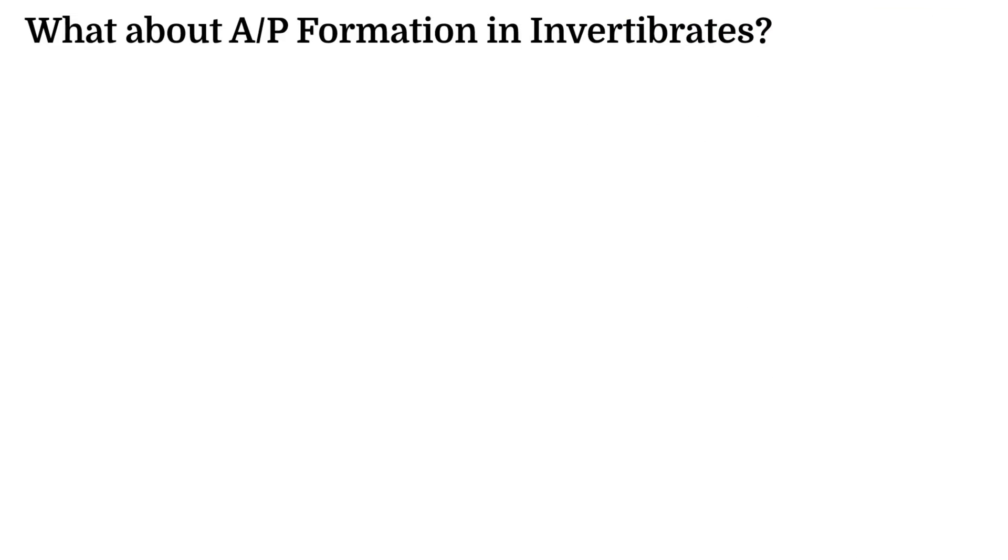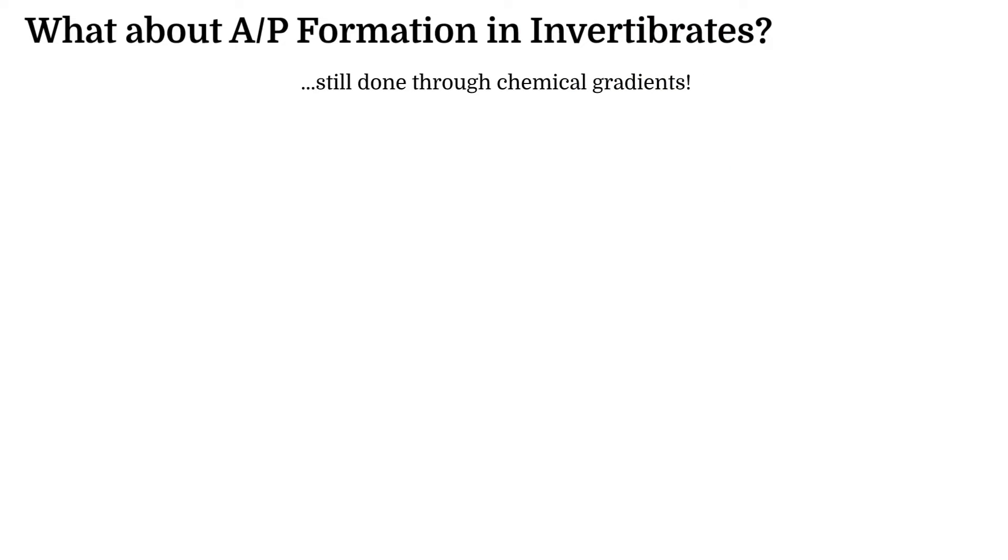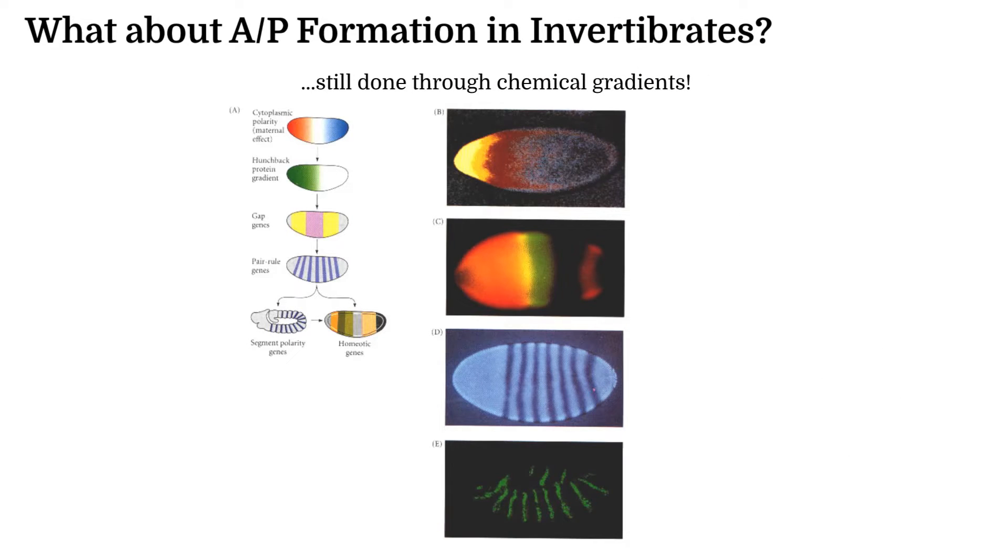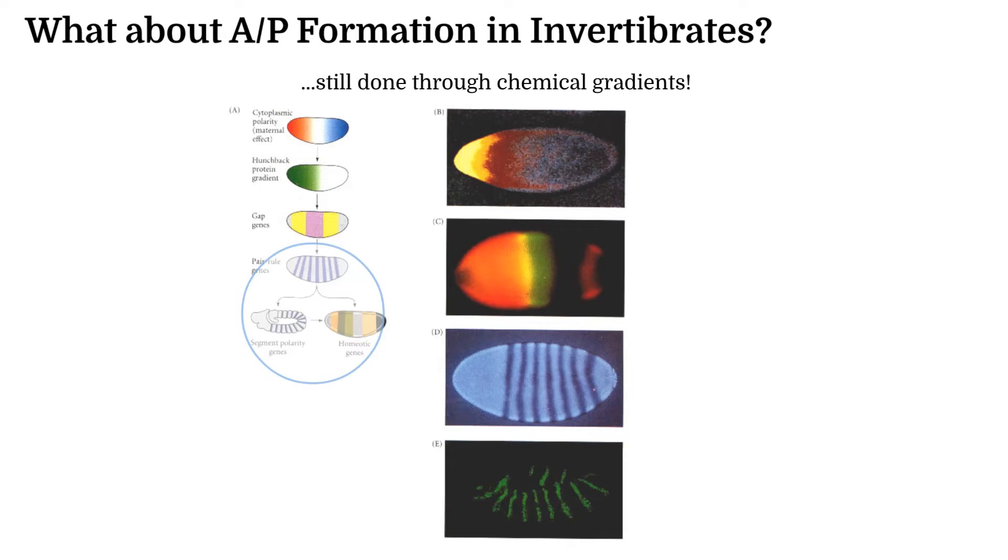Do gradients play a part in the formation of the anterior posterior axis in invertebrates as well? The answer is yes. Although invertebrates do not develop a neural tube that zips shut along the already defined axis as vertebrates do, the formation of the anterior posterior axis forms simultaneously with the segmentation of the body into specific fates such as the head, thorax, and abdomen.